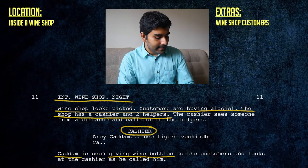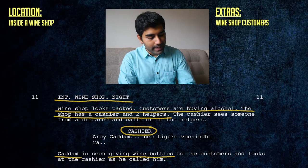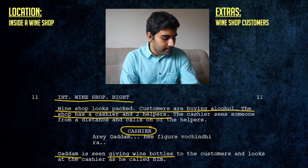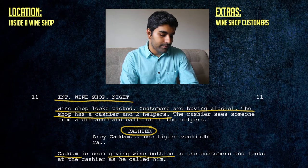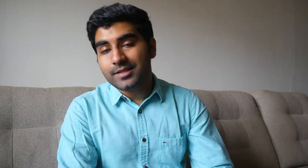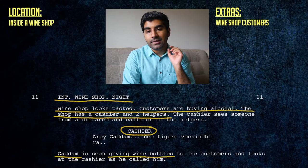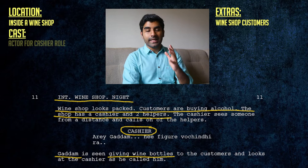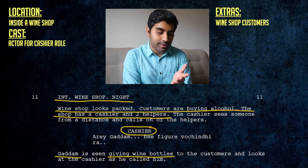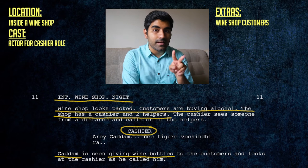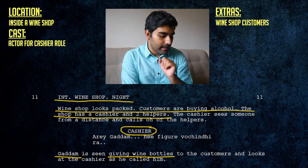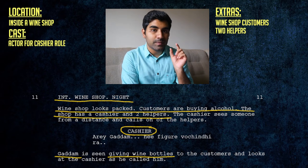The shop has a cashier and two helpers. The cashier sees someone from a distance and calls one of the helpers. The cashier has dialogue, so the cashier is a speaking part and that will come under cast. We need an actor to play the cashier, and we need two additional extras to play the helpers specifically.